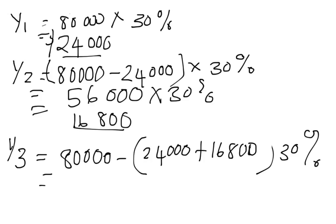$80,000 minus your accumulated depreciation times 30% gives us $11,760.